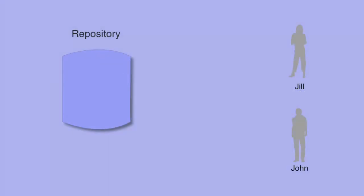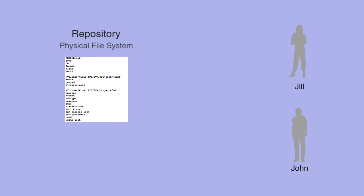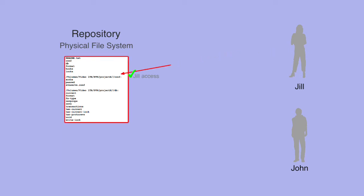Finally, we need to consider the security of the repository file system itself. Whether you are using FSFS or BerkeleyDB to support your repository, they are both stored on a file system, and this file system needs to be protected from both accidental and malicious damage. If you choose to use the file protocol to access your repository, then the only protection available is that offered by your operating system and the file system. As such, you will need to provide both read and write access to the repository file system, and it should be obvious why this poses a potential security problem.